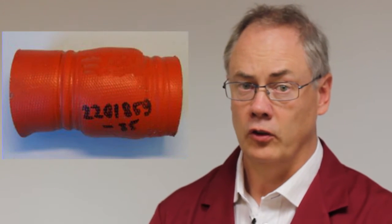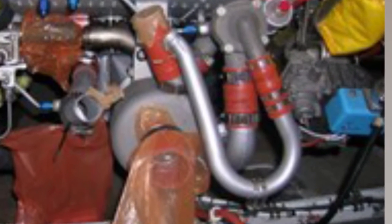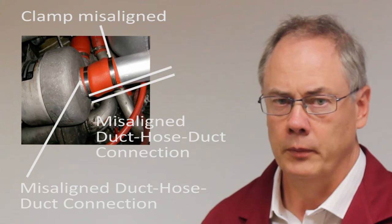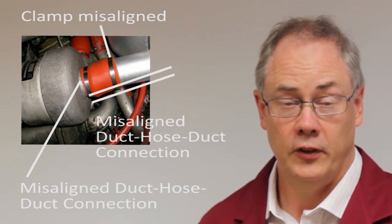Ensure that hoses are fitted correctly for their applications, as poorly fitted hoses may lead to system leakage. Over-tightening the clamp may strip its worm drive or crush the hose. These kinds of damage will degrade the sealing efficiency, potentially leading to a leak. Also be on the lookout for hose misalignment, as this may lead to hose separation and system leakage.